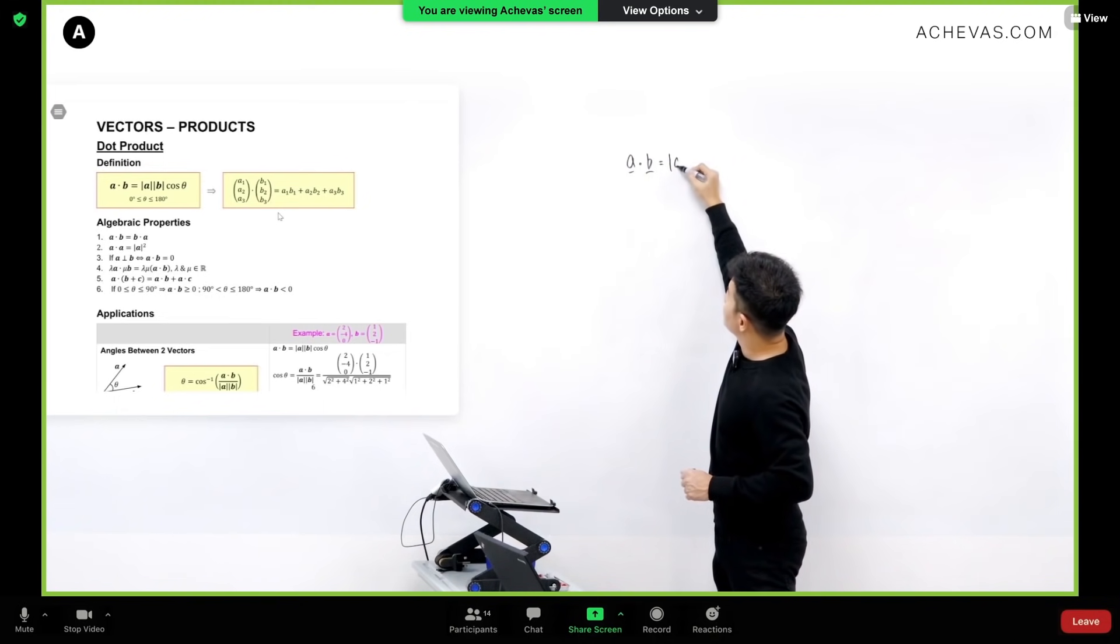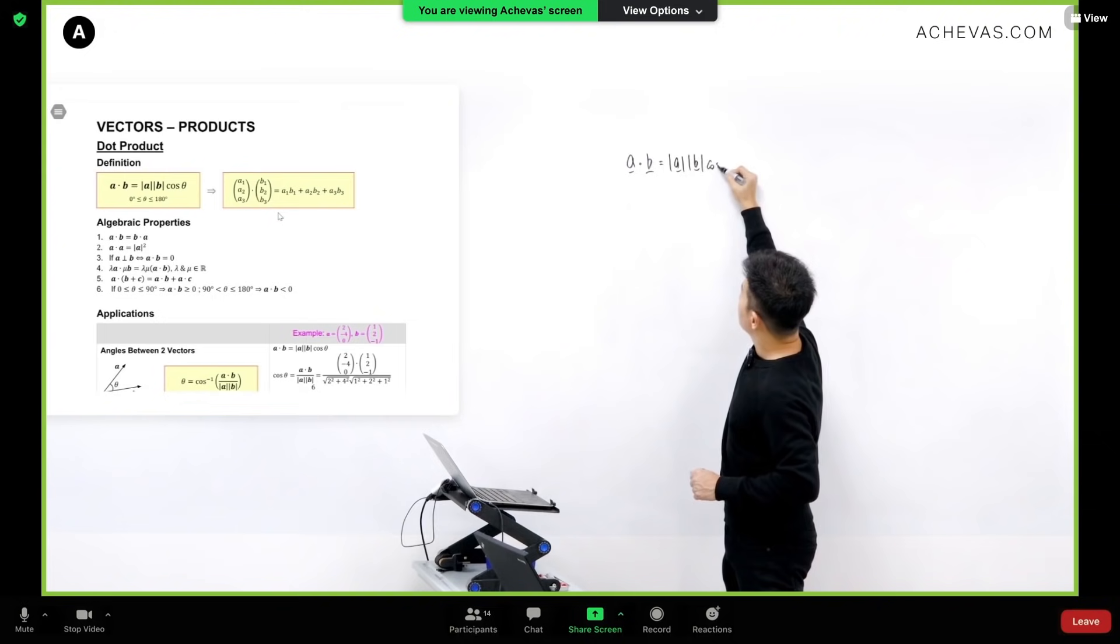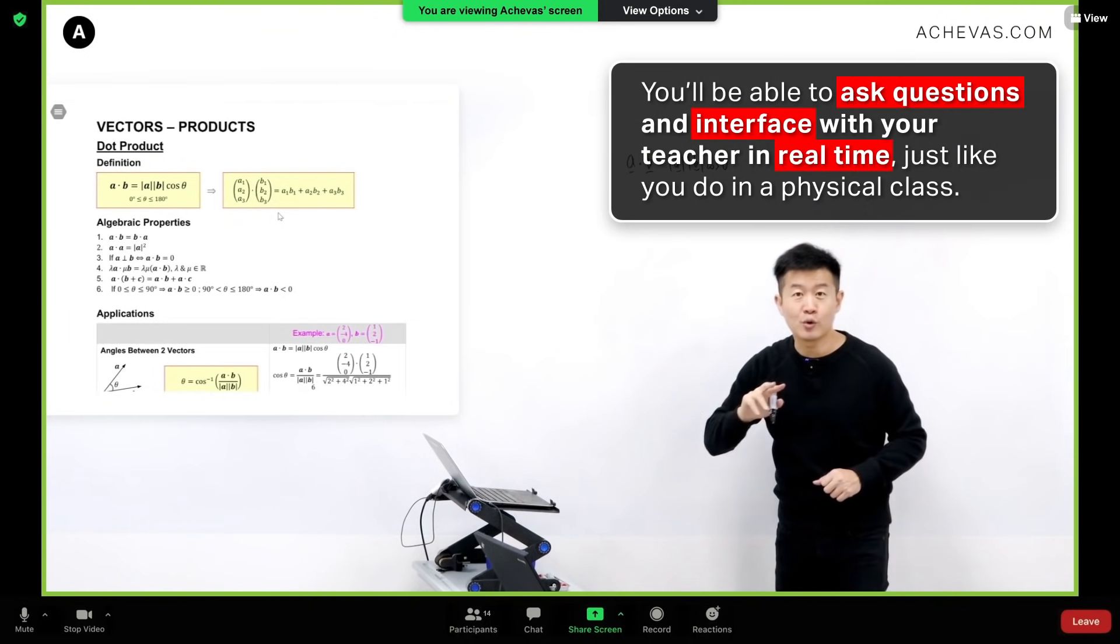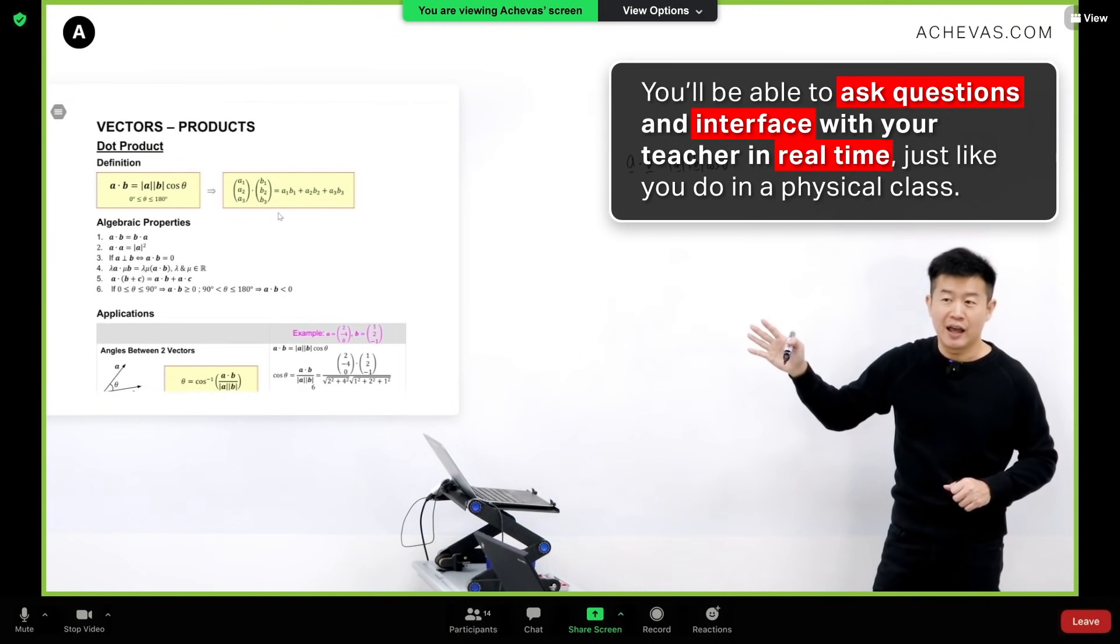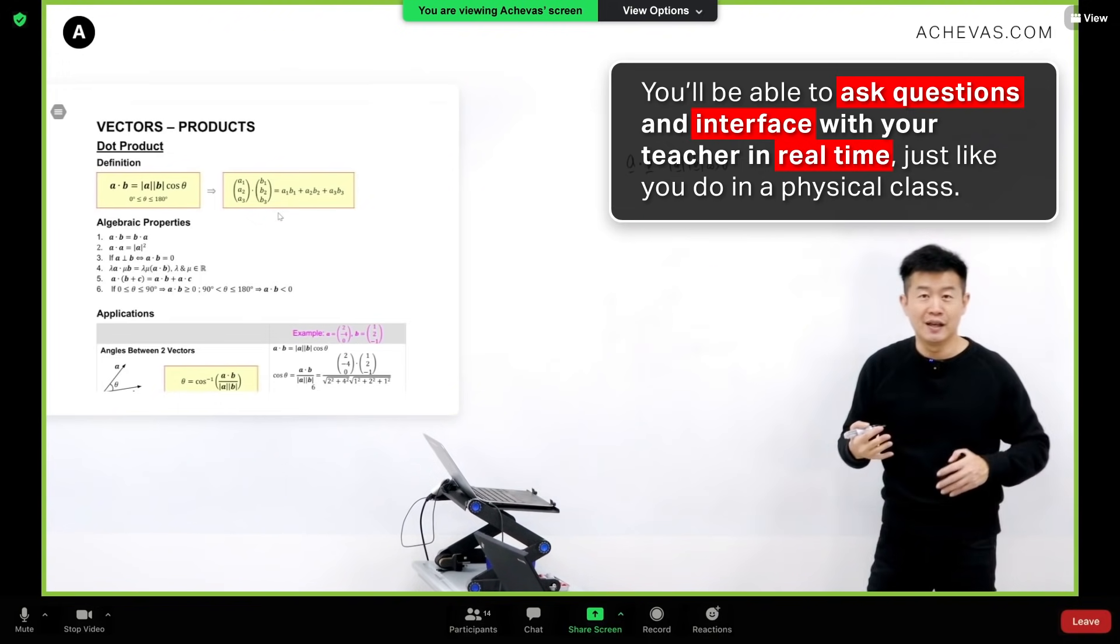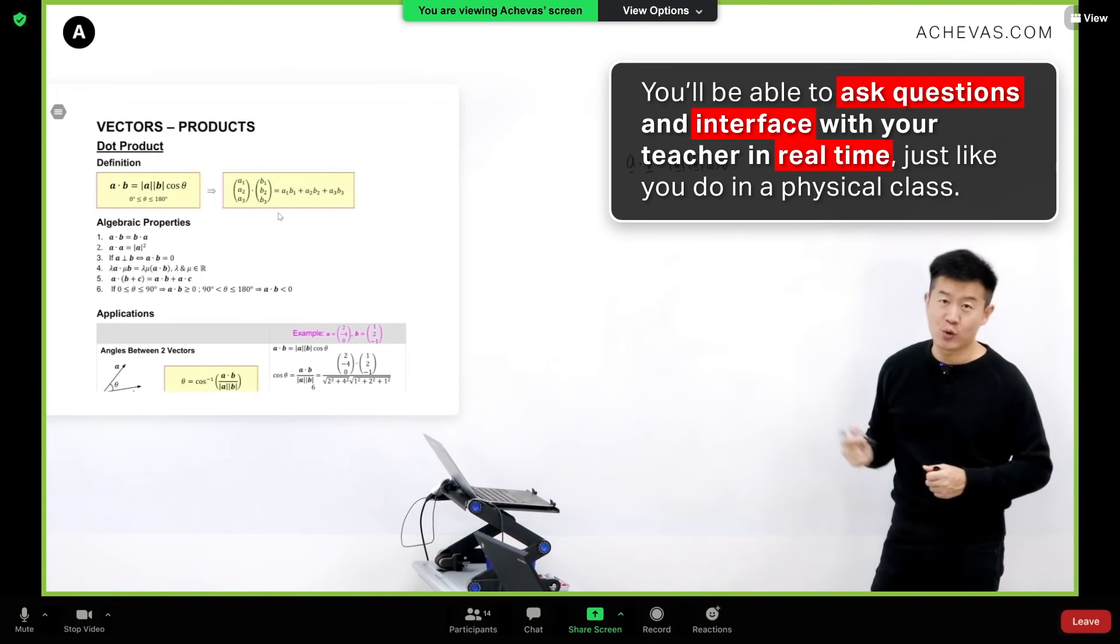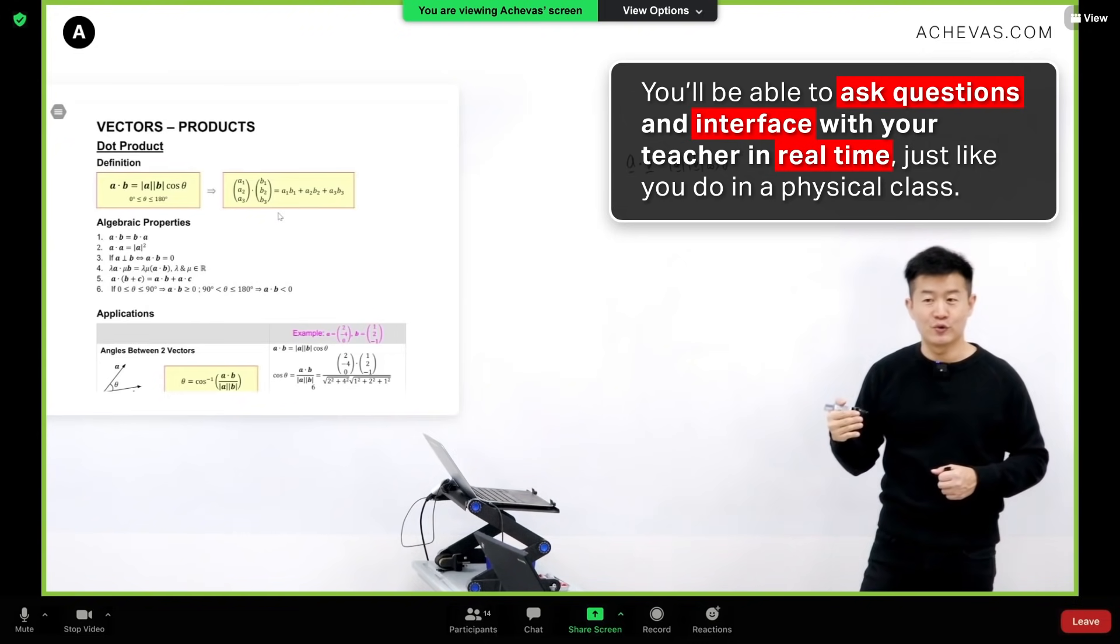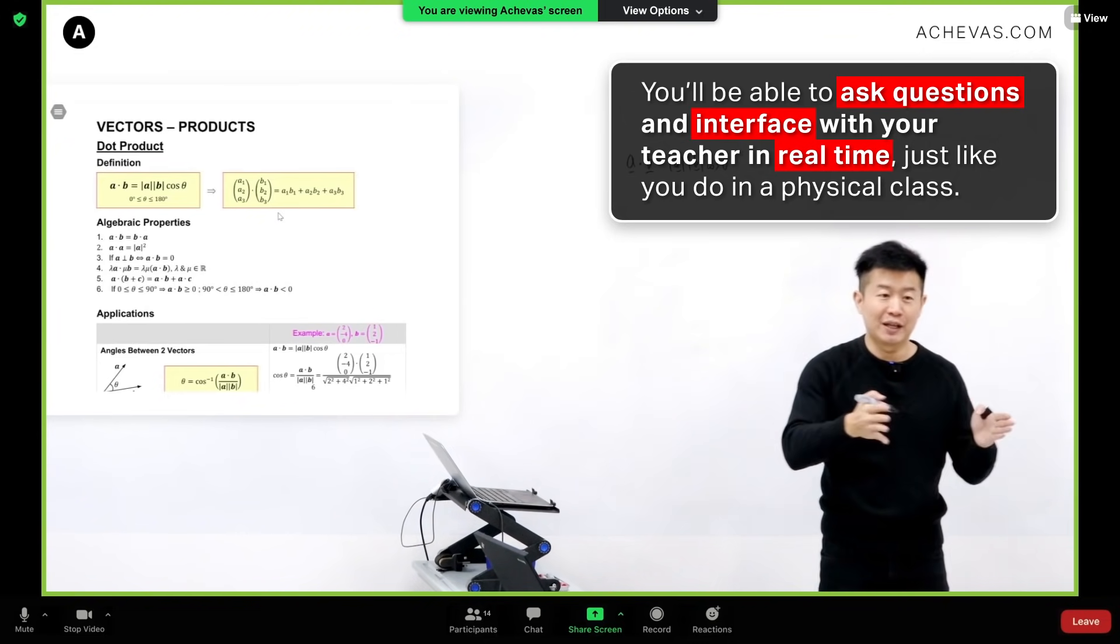And a dot b is defined as modulus of a, modulus of b, cosine theta. You can very quickly take a look at Achievas TV, and if you click this yellow color box, you will be able to see the derivation of how this equation came about. It is actually derived through using cosine rule being applied to a three-dimensional space for vectors.